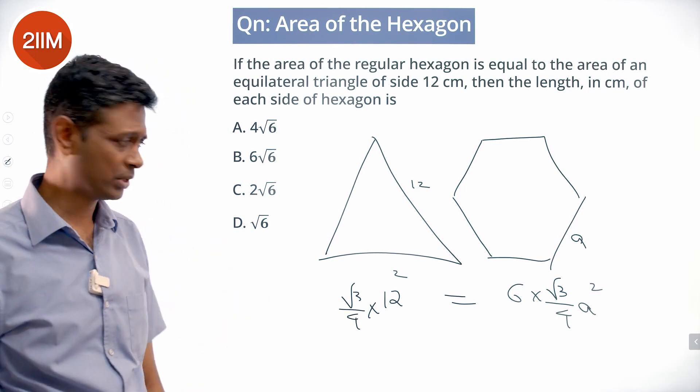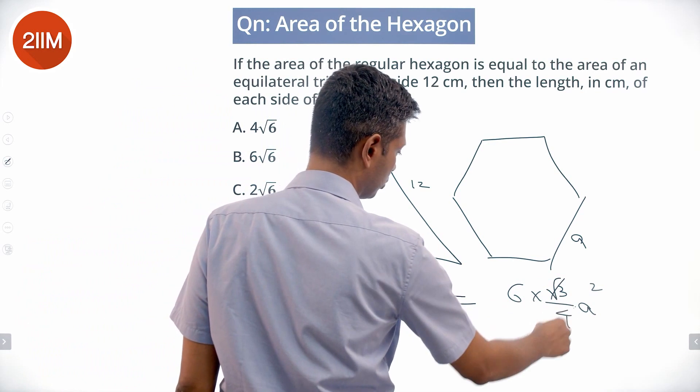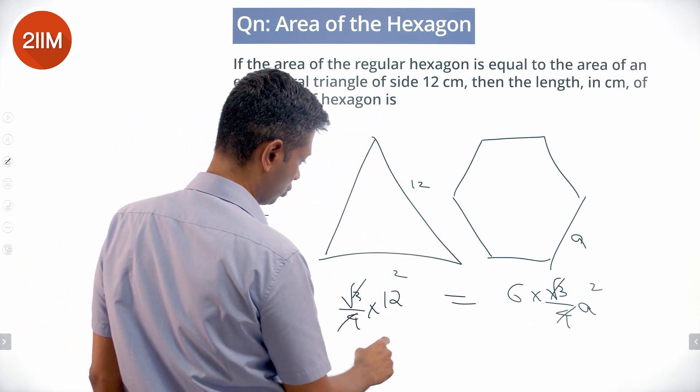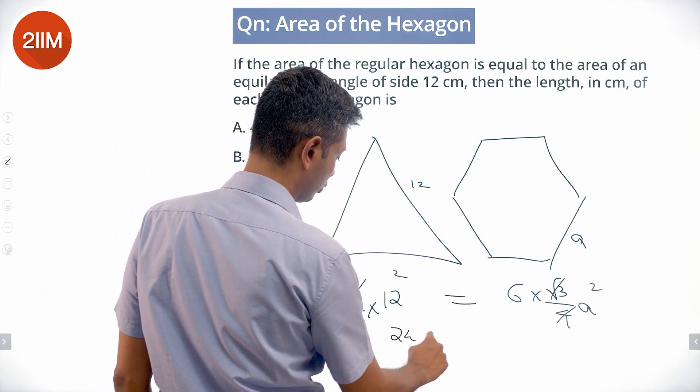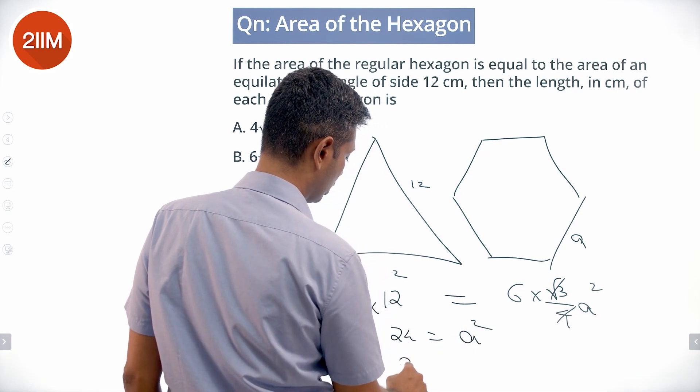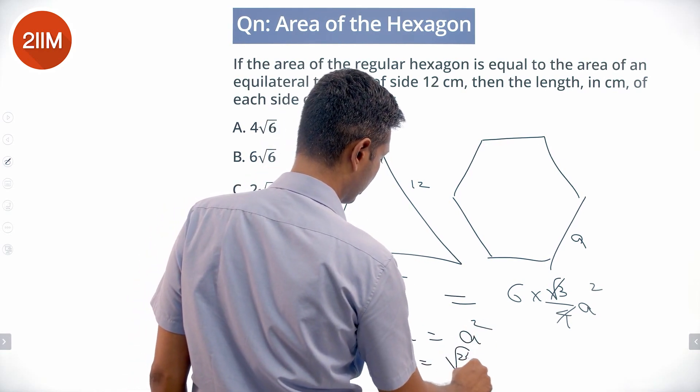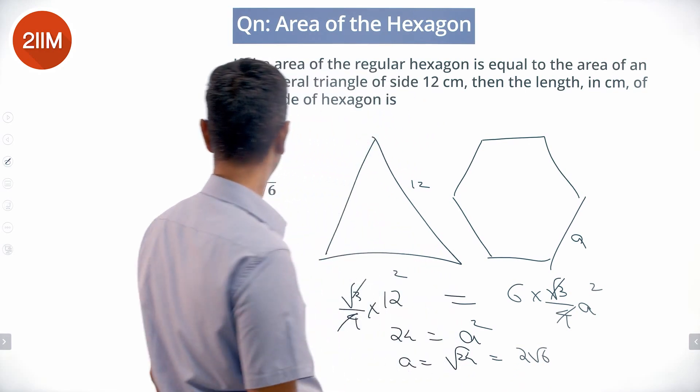root 3 by 4 gets canceled off. 144 by 6 is 24 equals a squared. So a is root of 24, we can extract the 4 outside to get 2 root 6.